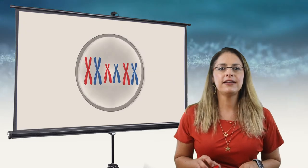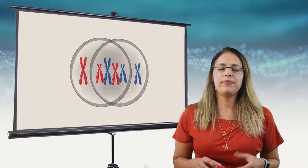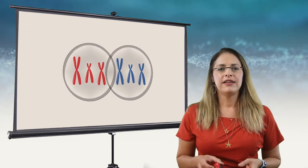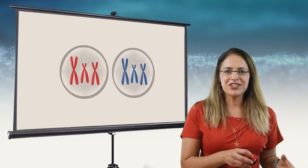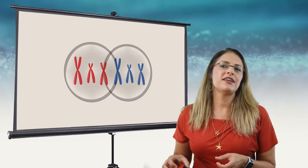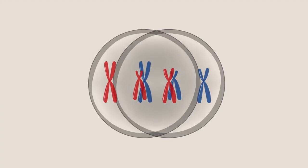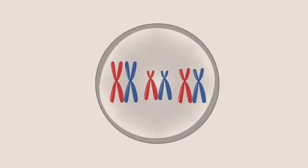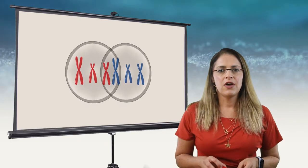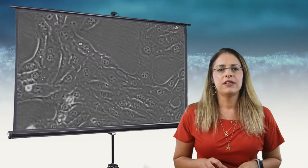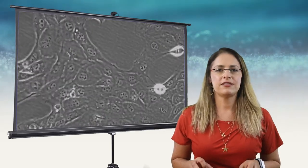Sexual reproduction involves two alternating parts that depend on each other: gamete production and fertilization. In this chapter, we learn about gamete production, also called gametogenesis.